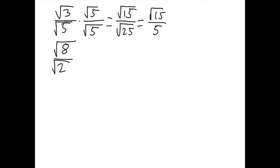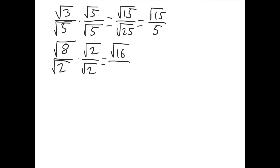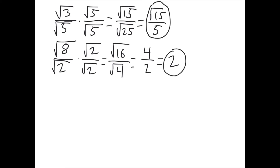Another example: square root of 8 divided by the square root of 2. We can't have a square root in the denominator, so we multiply by square root of 2 over square root of 2. Square root of 8 times square root of 2 gives the square root of 16. Square root of 2 times square root of 2 gives the square root of 4. The square root of 16 is 4 and the square root of 4 is 2, so 4 divided by 2 is 2. The denominator is rationalized.